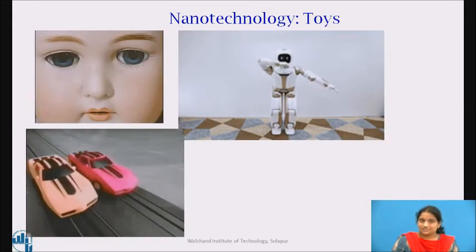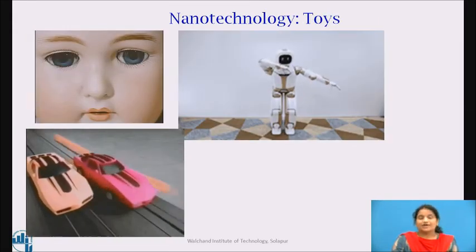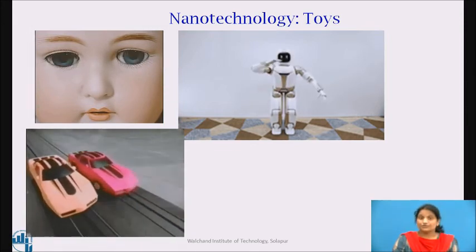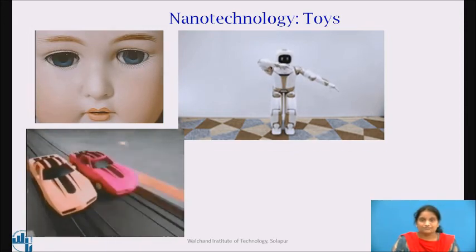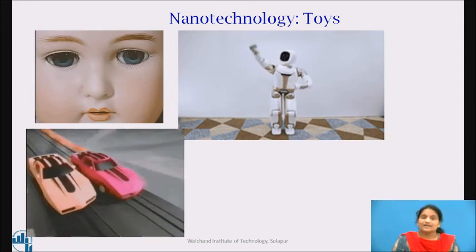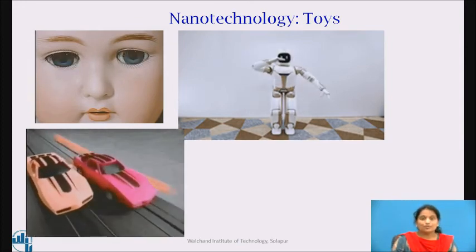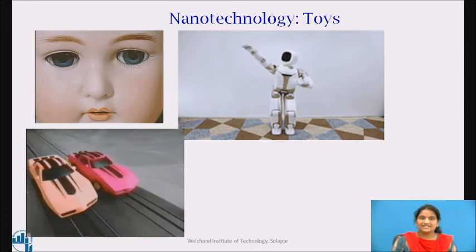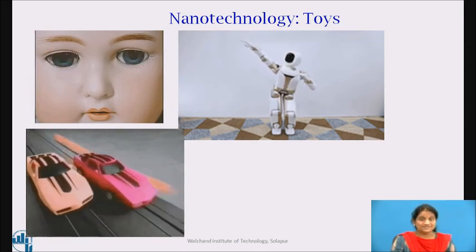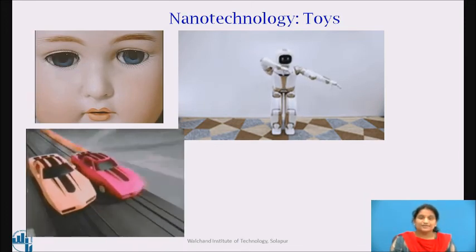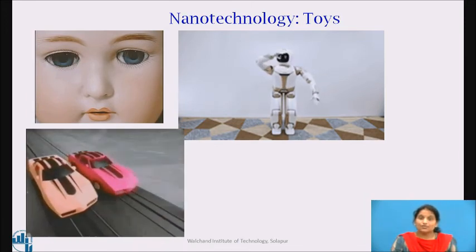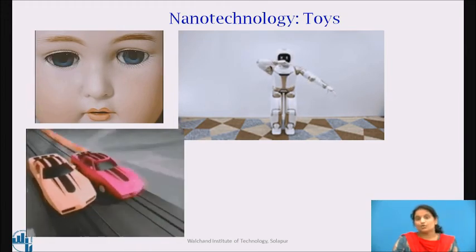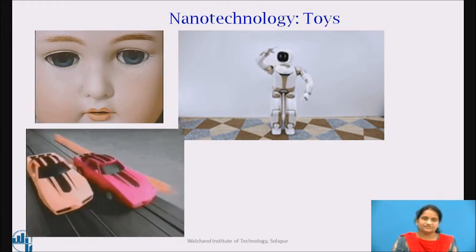The toy industry has also been well geared to embrace nanotechnology. Eye movements of dolls and robot movements are enjoyed by children but can appear quite brisk. Nanotechnology-based motors are now being used by the toy industry, making movements very smooth and swift.